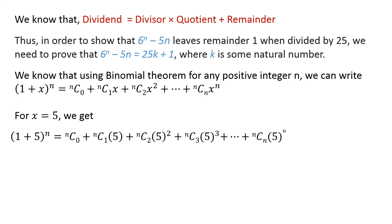For x equals 5, we get: (1 + 5) raised to the power n equals n choose 0, plus n choose 1 times 5, plus n choose 2 times 5 raised to the power 2, and so on, plus n choose n times 5 raised to the power n.